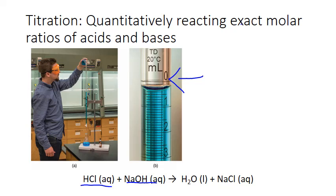In a titration we fill the burette with one of our reactant solutions — for example, sodium hydroxide — and underneath the burette we put a flask containing the other reactant, in this case hydrochloric acid. We add very small measured amounts of sodium hydroxide from the burette into the flask and measure the pH of the solution in the flask with each addition. When we've neutralized all the acid in the flask, we'll see a dramatic shift in pH from low acidic values before neutralization, to neutral at the exact point of neutralization, to more basic pH values when we've added base past the point of neutralization.